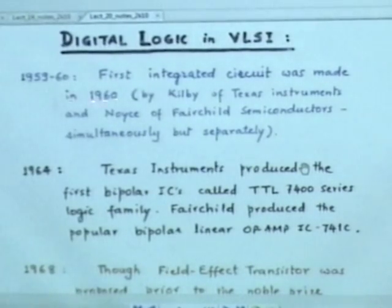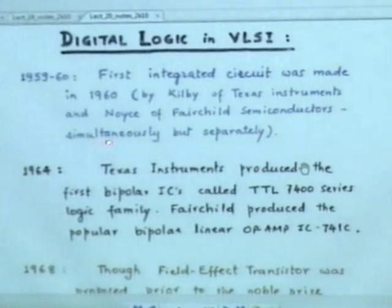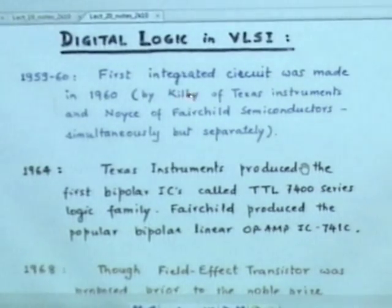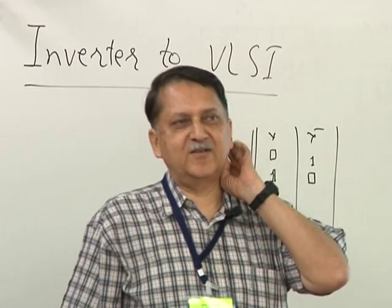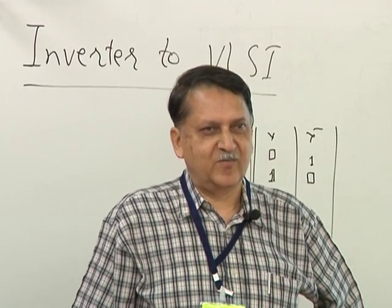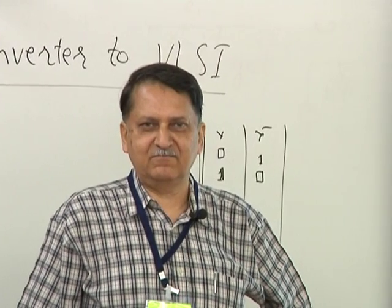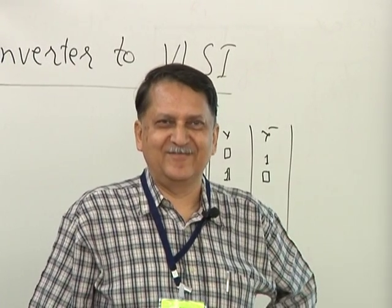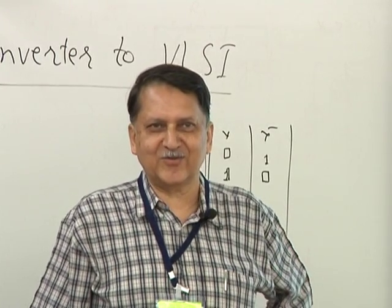From 1959 to 1960, the first integrated circuit was made. In 1960, Kilby of Texas Instruments and Noyce of Fairchild Semiconductor simultaneously but separately made the IC, and they both got the patent. But only Kilby got the Nobel Prize in 2000, and Noyce did not — the simple reason is well known: you have to do great work, but you also have to outlast your competition, meaning you have to be alive when the Nobel Prize is given, as it is not given posthumously.